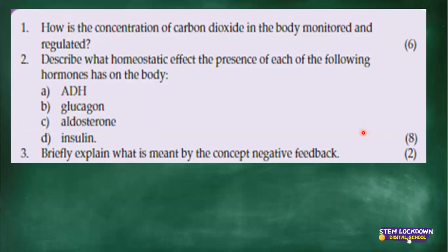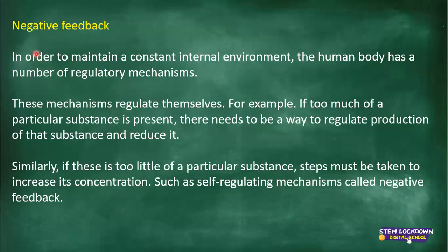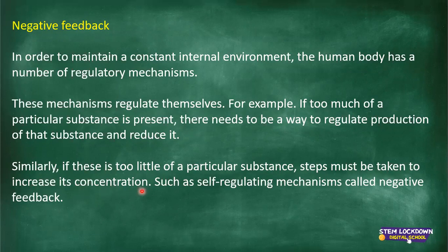Question three: Briefly explain what is meant by the concept of negative feedback. This is two marks. In order to maintain a constant internal environment, the human body has a number of regulatory mechanisms. These mechanisms regulate themselves. If too much of a particular substance is present, there needs to be a way to reduce it. Similarly, if there is too little, steps must be taken to increase its concentration. Such self-regulating mechanisms are called negative feedback.